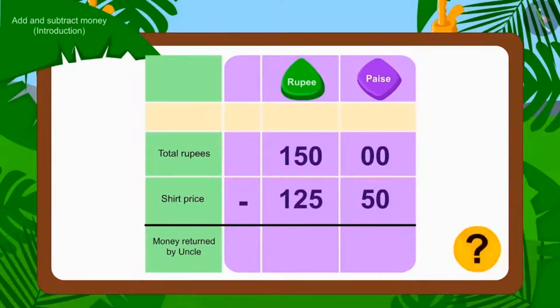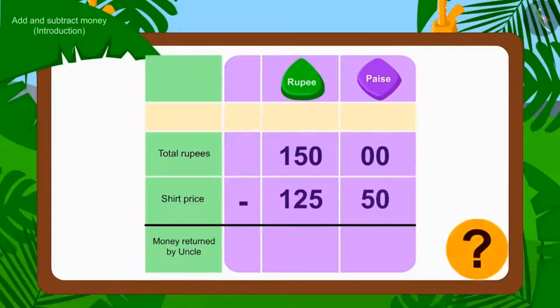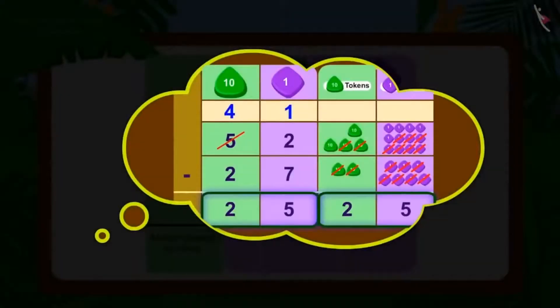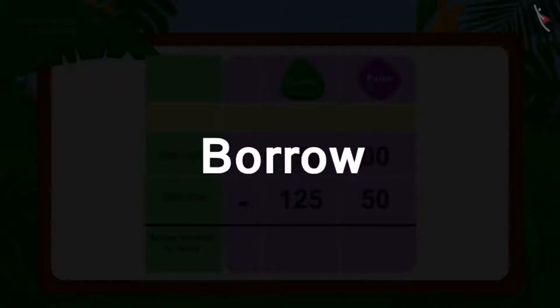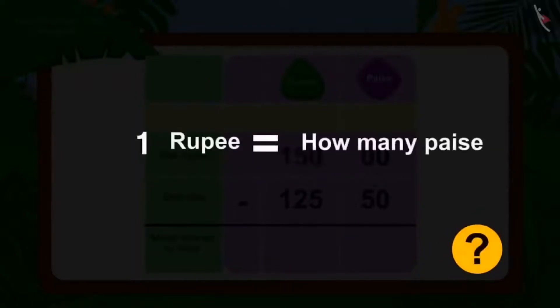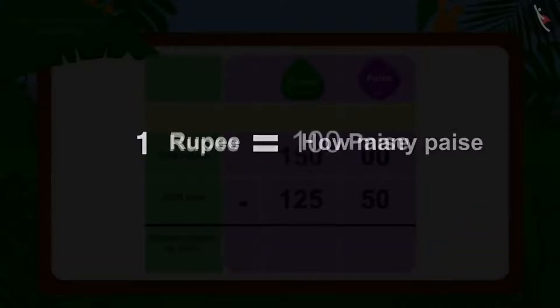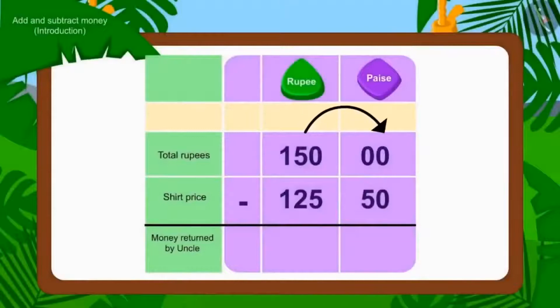Is there any paise for Rs. 150? No. Then how will we subtract 50 paise of Rs. 125.50 from 0 paise of Rs. 150? Do you remember the borrowing process learned in the lesson on subtraction? Here, we will use the borrowing process. We will borrow Rs. 1 out of Rs. 150. How much is Rs. 1 worth? 100 paise.